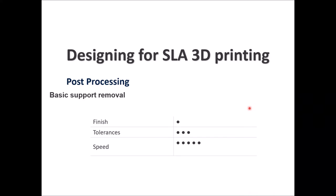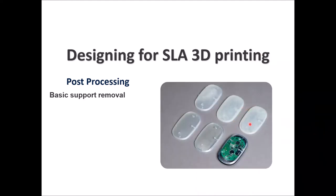In terms of ratings for basic support removal: finish is 1 out of 5, tolerances are 3 out of 5, and speed is 5 out of 5 — you get the part fast, but at the cost of finish quality and reduced tolerance accuracy. These are examples of a single part printed through SLA that went through several types of post-processing, ranging from poor to medium to very presentable quality.